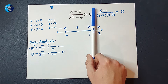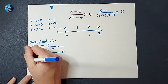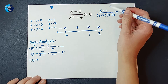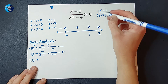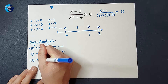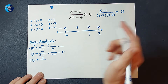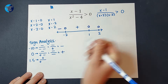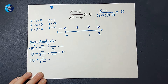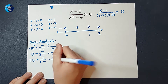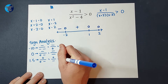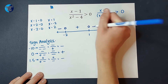Now I'm going to pick a number between one and two — let's pick 1.5. If I plug in 1.5, I get 1.5 minus one, which gives me a positive number on top. 1.5 plus two gives me a positive on bottom, and 1.5 minus two gives me a negative. So on top I have a positive; on bottom, positive times negative is negative. And positive divided by a negative is negative. So this section is negative.